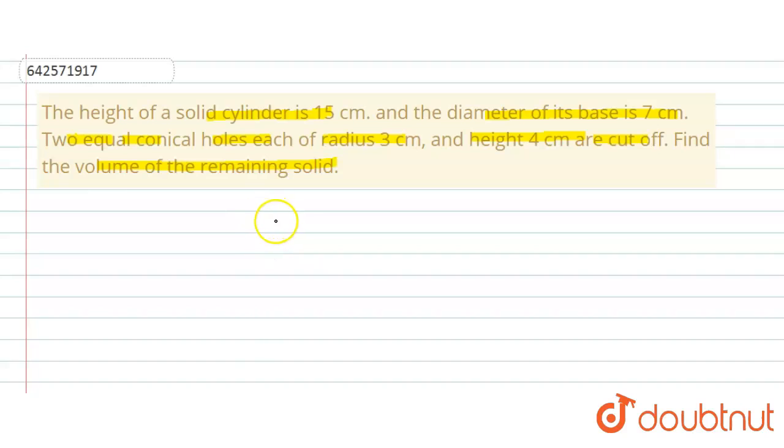diameter of cylinder is equal to 7 centimeters, and height of cylinder is equal to 15 centimeters.